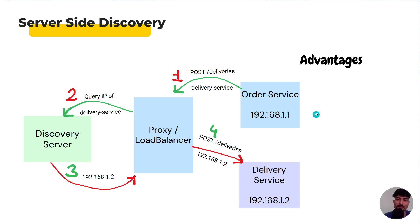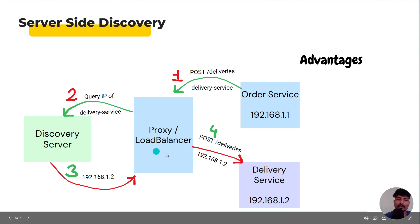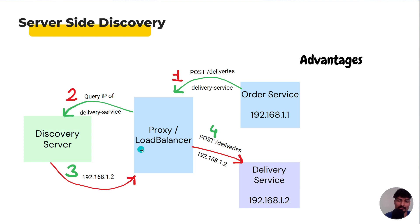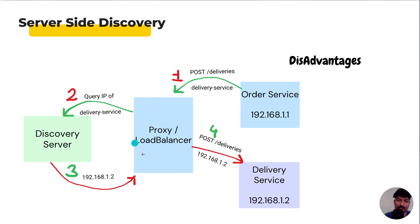Server-side discovery solves this disadvantage — we do not have to implement the logic in every client; instead, we implement the logic in the load balancer or proxy itself. However, server-side discovery has one disadvantage: we need an additional component to maintain and deploy. Also, with the introduction of the proxy or load balancer, the number of network hops has increased in server-side discovery.